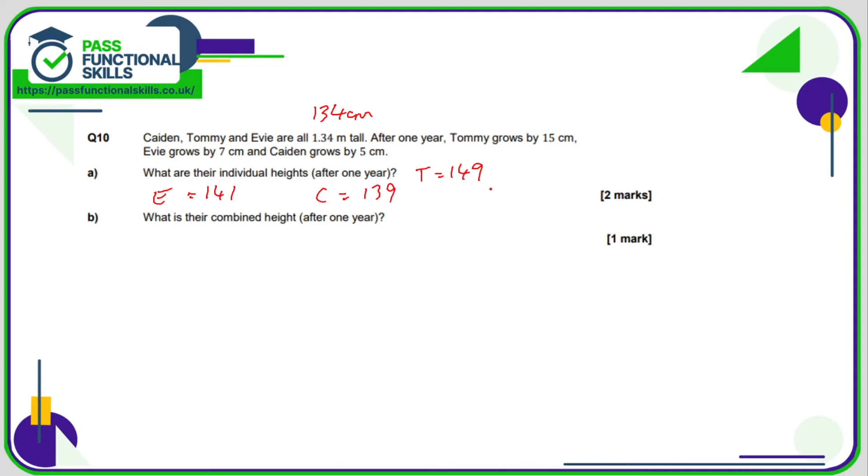However, the question doesn't state whether they want the answer in centimeters or meters. But you should be comfortable putting these into meters again, just dividing all these numbers by 100. So it would be 1.49 meters for Tommy, 1.41 meters for Eevee, and 1.39 meters for Caden. And after one year, then their combined height is simply going to be 1.49 plus 1.41 plus 1.39, and that comes to a total of 4.29 meters.